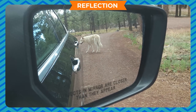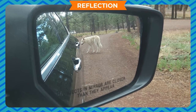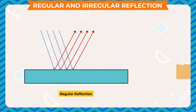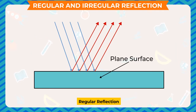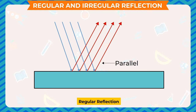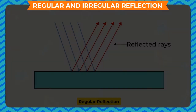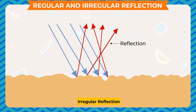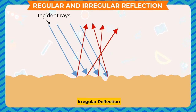The side mirror in any auto vehicle makes the virtual image of the vehicle behind it. Reflection taking place from a plane, smooth surface is said to be regular reflection — all incident rays are parallel to each other and all reflected rays are also parallel to each other. Irregular reflection, also known as diffused reflection, is the reflection taking place from an uneven surface. Here, the incident rays are parallel but reflected rays are not.